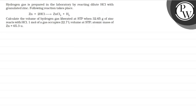Hello, let's read the question. Hydrogen gas is prepared in the laboratory by reacting dilute HCl with granulated zinc.